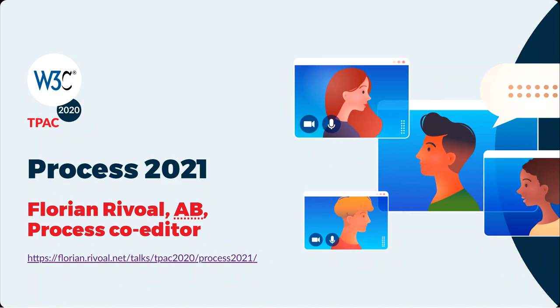A brief reminder to help put things in context. The W3C process is one of our key governing documents. It describes the organizational structure of the W3C, as well as processes, responsibilities, and functions that enable W3C to accomplish its mission. In particular, it describes the lifecycle of the various documents we publish. Revisions to the process are developed in the process community group, which is open to anyone and includes the W3C's advisory board. The process community does not make any final decision though. When it thinks it's ready for an update, it submits its work to the advisory committee for review and ratification.